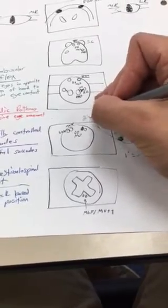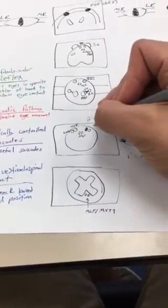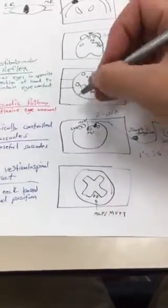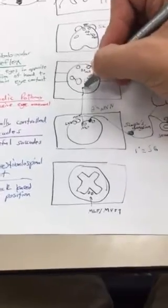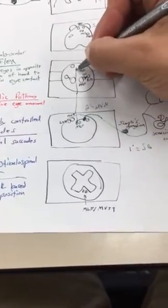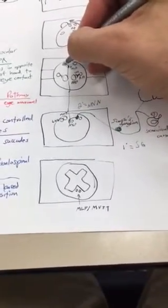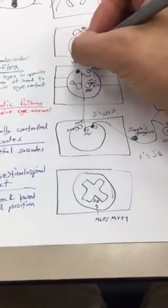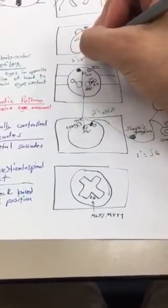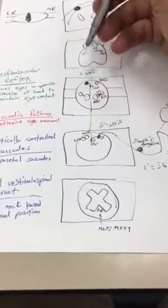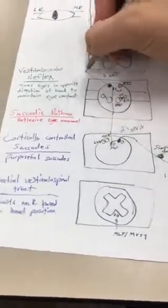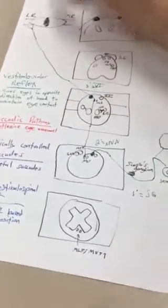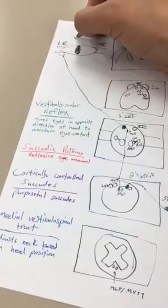So our medial vestibular nucleus, at this point, it's going to decussate quickly and then ascend through our MLF up to our pons to innervate what is now the contralateral abducens nucleus. From this point, we know abducens activates lateral rectus, so it will activate the lateral rectus on that side, which is going to pull this eye outwards.